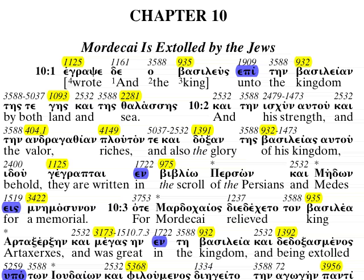Basically, Amphi — alpha, mi, phi, iota — is associated with the genitive, the dative, and the accusative. With the genitive, it means about or near. With the dative, it means about, with, or concerning. And with the accusative, it means around, about, or nearly.